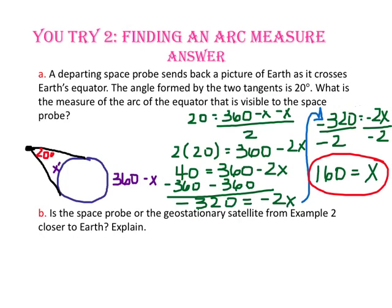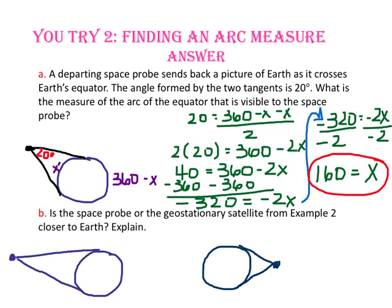For part B, is the space probe or the geostationary satellite from example 2 closer to Earth? Notice that in the diagram where the object is farther away from Earth, the angle measure is smaller than in the diagram where the object is closer to Earth. Since the angle measure formed by the tangents was 20 degrees from the space probe but 17.5 degrees from the geostationary satellite, the probe, since its angle measure is larger, must be closer to Earth.